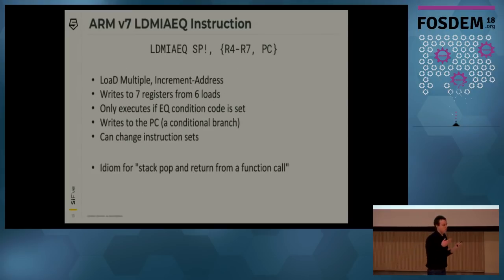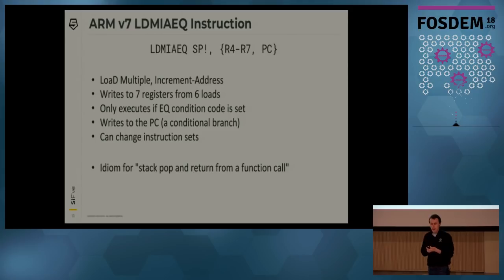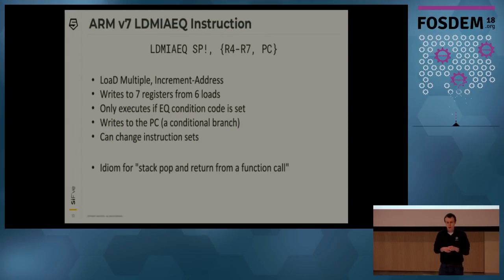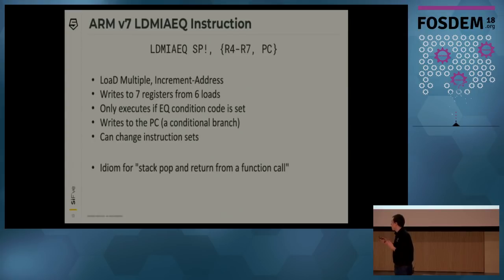The next option is ARM — it stands for the Acorn RISC Machine, so it's probably pretty simple. But let's look at the LDMIAEQ instruction, which has so many letters it can't possibly be a RISC machine. It loads multiple memory addresses from the stack, increments another address, writes to seven registers while reading six from memory. It's conditional — only executes if the equality condition code is set. It can write to the PC because on ARM the PC is an addressable register, meaning it can change control flow. Additionally, ARM encodes the Thumb instruction set in the lowest bit of the PC, so something we use as an idiom for 'pop the stack and return' is also capable of a bunch of other things — a recipe for disaster.